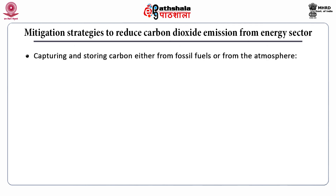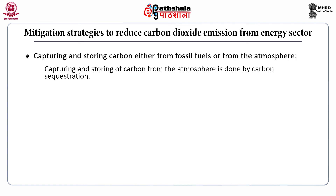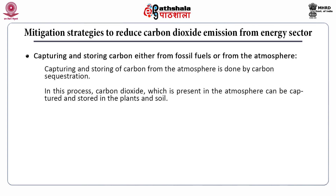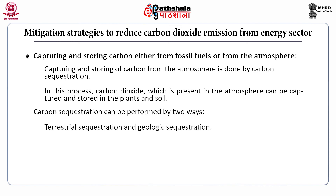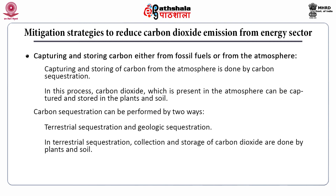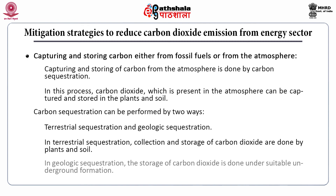Capturing and storing carbon — either from fossil fuel or from the atmosphere — can also reduce carbon dioxide emission. Capturing and storing carbon from the atmosphere is done mainly by carbon sequestration, in which carbon dioxide present in the atmosphere can be captured and stored in plants or in the soil. Carbon sequestration can be performed in two ways: terrestrial sequestration, where collection and storage of carbon dioxide are done by plants and soil, and geologic sequestration, where storage of carbon dioxide is done under suitable underground formations.